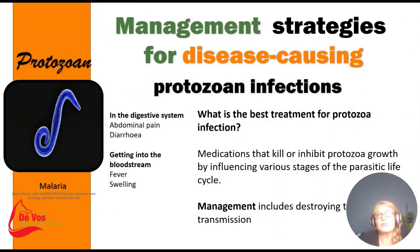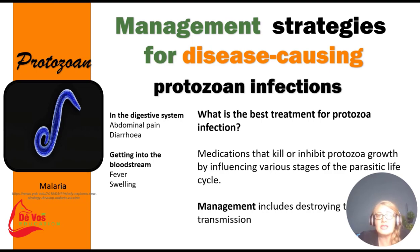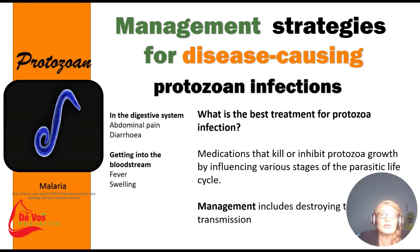So how do we manage protozoan infections? A typical example would include malaria. Malaria symptoms range from abdominal pain and diarrhea to fever and swelling. Treatment involves medications inhibiting the growth and various life cycle stages of the protozoa. Management would also include destroying the vector responsible for the transmission of the protozoan.